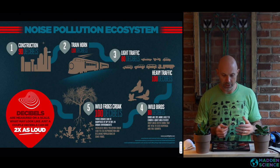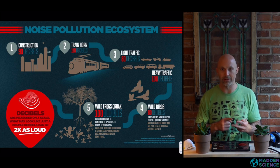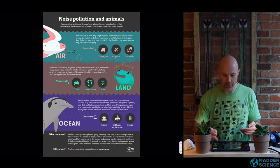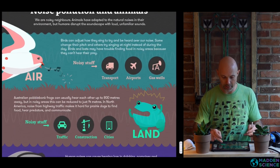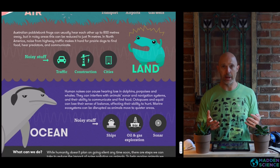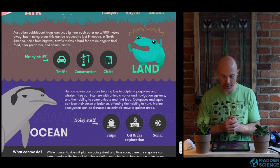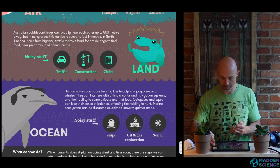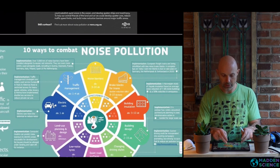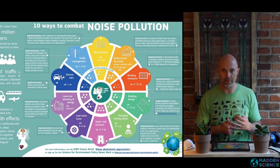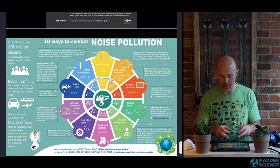Here you can see noise meters for different ecosystems: construction, trains, light traffic, heavy traffic. Keep in mind noise pollution is not just a detriment to our health but to the health of the ecosystem and the organisms in it, including birds, frogs, marine mammals, octopus, and squid. Here are some interesting ways to combat noise pollution: traffic management, noise barriers, different brakes on trains, insulation, driving styles, different road surfaces — all sorts of options.